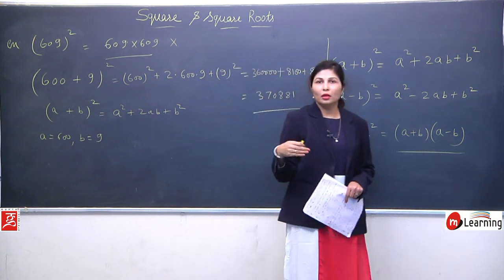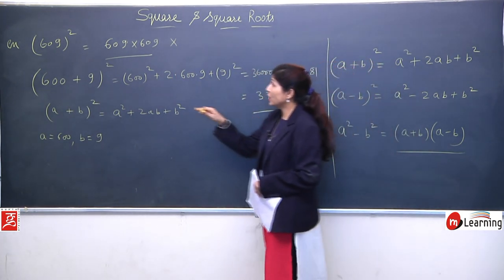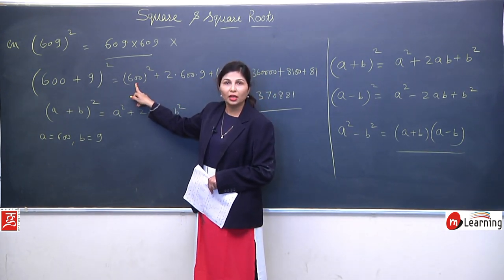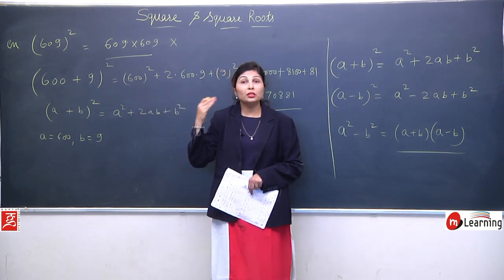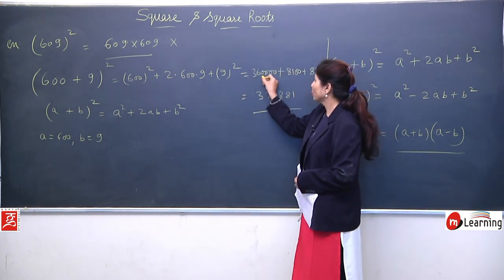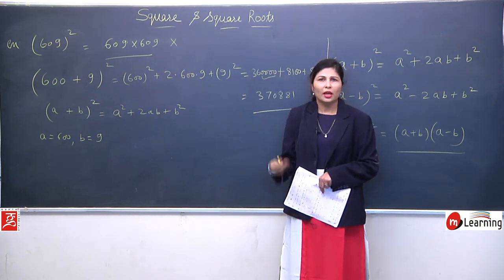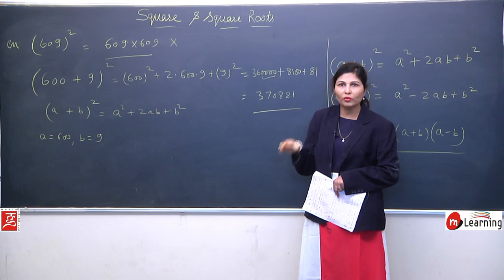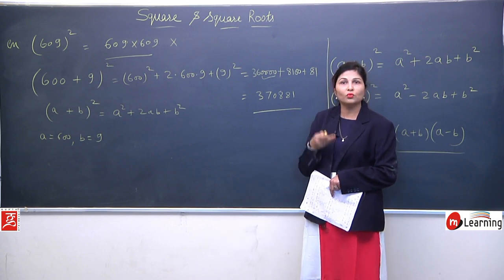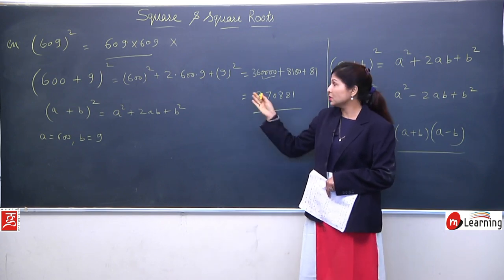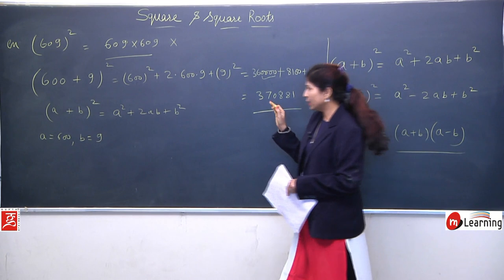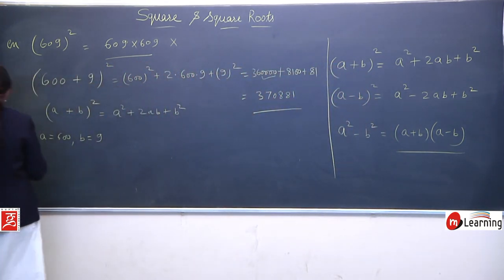Yahan par humne square nikalna bahut easy hua. Why? Because we have learnt properties: agar aapko aise situation aaye ke zeros hain, toh pehle 0 dekh lijiye kitne hain — yahan par 2 hain, and we are doing square, so wo twice ho jayenge, 2 ka double kya hoga — 4, that's why I have put 4 zeros. And 6 square is 36. So in this type of question, hum identity ke through hi solve karenge.